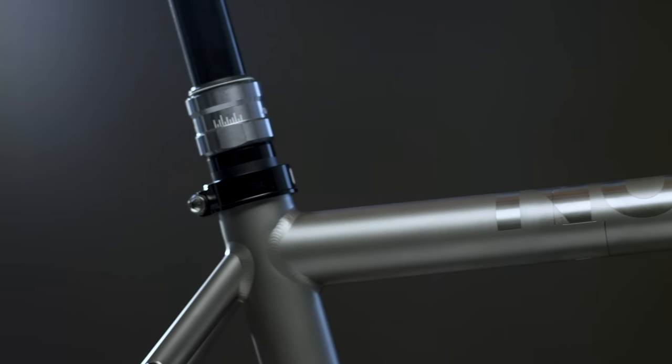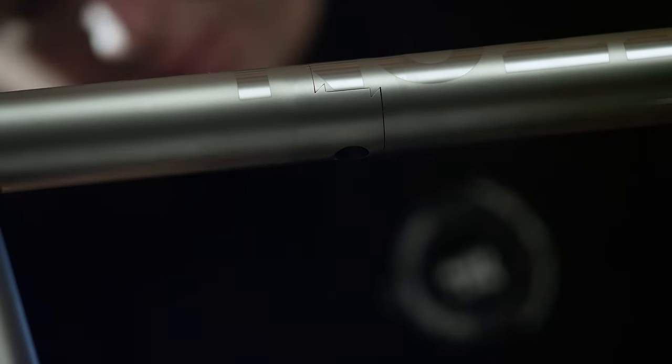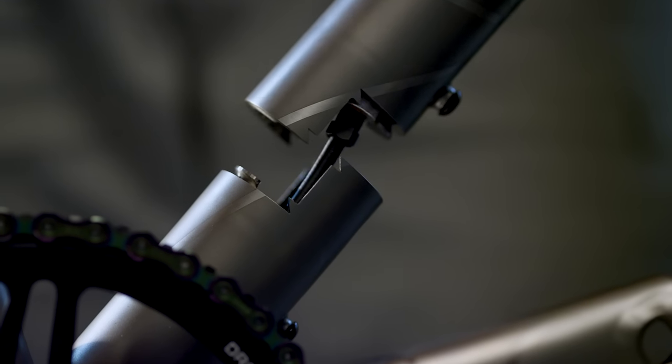A coupler is a device that allows us to take a bicycle apart. It interrupts the tubes. We're able to take it apart at the top tube and down tube, and put it in a case that's half the size of your normal bike box.